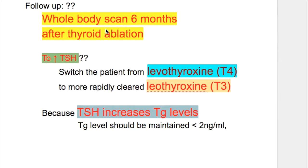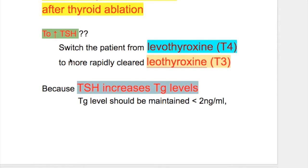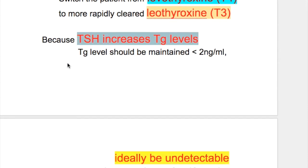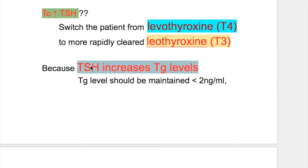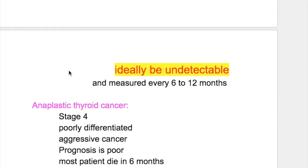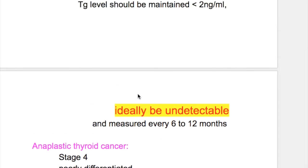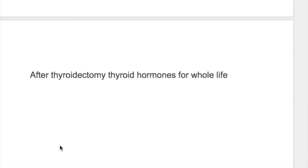Follow-up includes a whole-body scan six months after thyroid ablation. To increase TSH, the patient is switched from levothyroxine T4 to liothyronine T3, which is more rapidly cleared. When TSH increases, it stimulates thyroglobulin production. Any increase in thyroglobulin indicates recurrence or incomplete removal. Thyroglobulin should ideally be undetectable after TSH increase. After thyroidectomy, thyroid hormones are given for life.